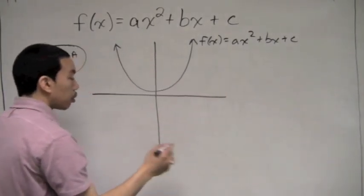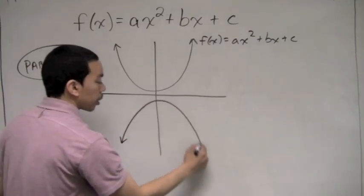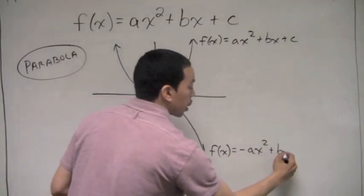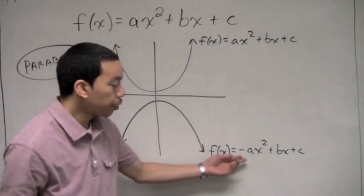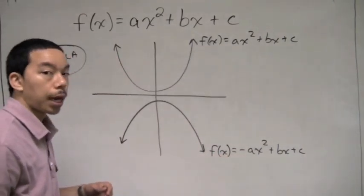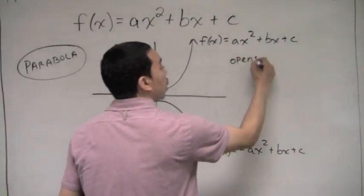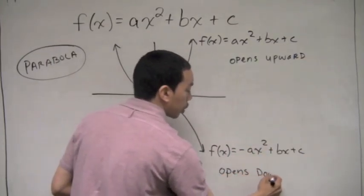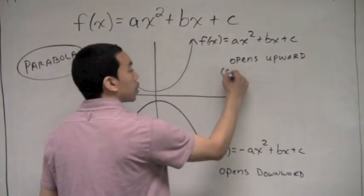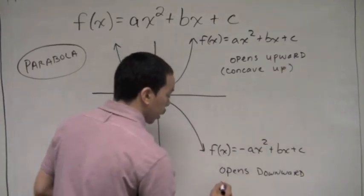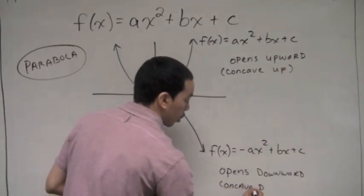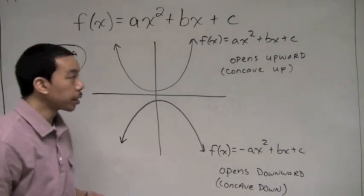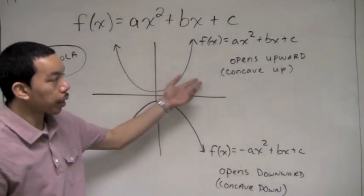In the first case, the leading coefficient was positive. However, we may have a parabola where the leading coefficient is negative. When the leading coefficient is positive, we say the parabola opens upward. When it's negative, it opens downward — in other words, it's concave down. So f of x equals ax squared plus bx plus c forms the graph of a parabola, either opening upward or opening downward.